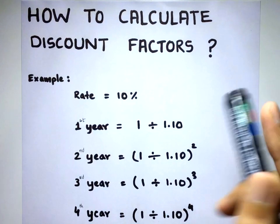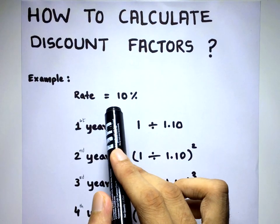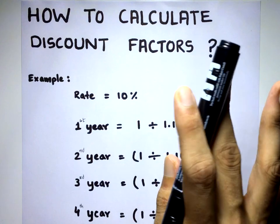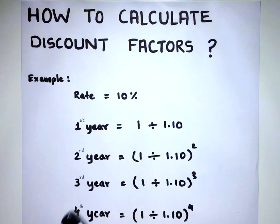It's really simple, let's take an example. Let's say the rate is 10% and you want to calculate the discount factors for four years: first year, second year, third year, fourth year.